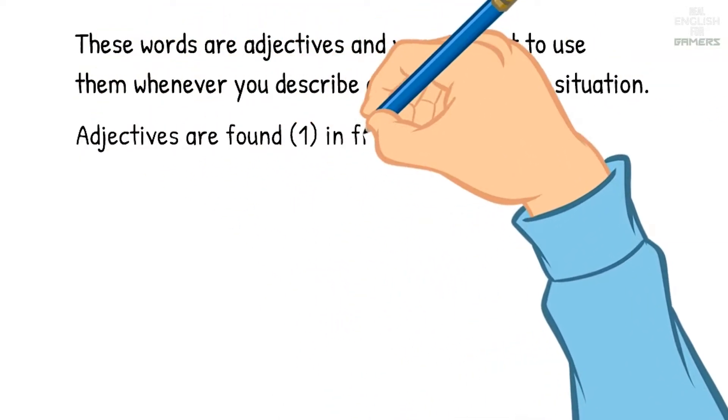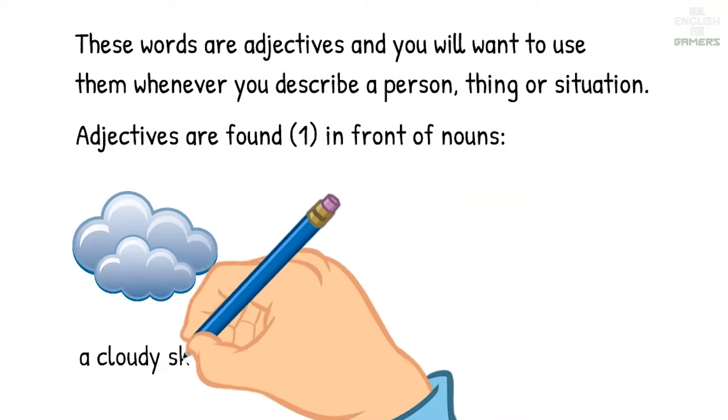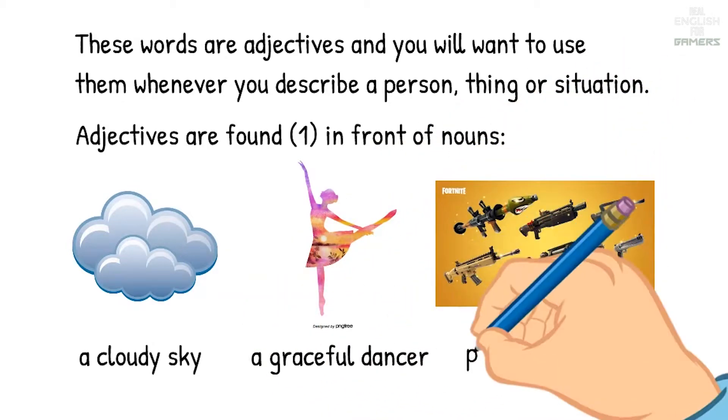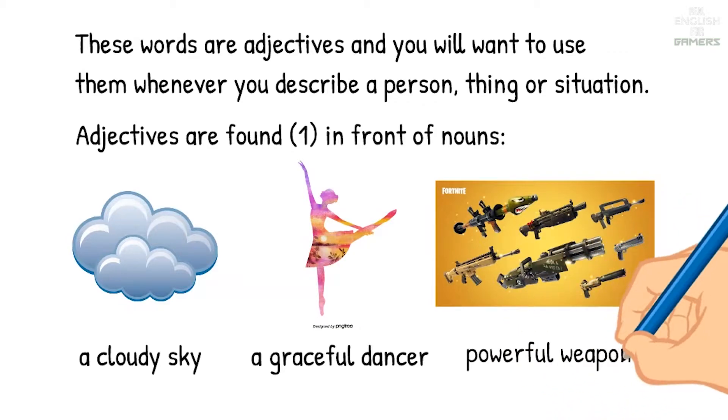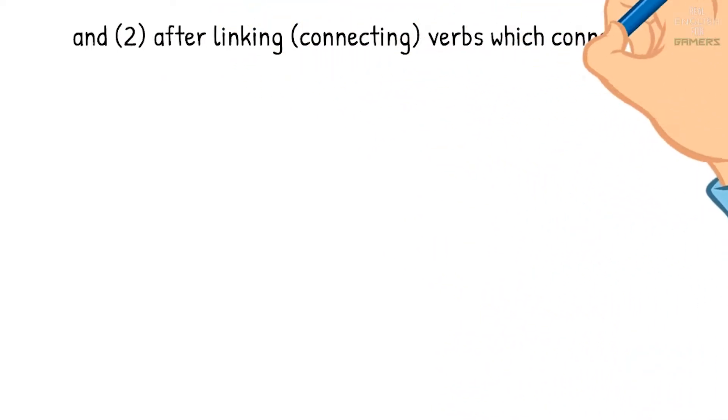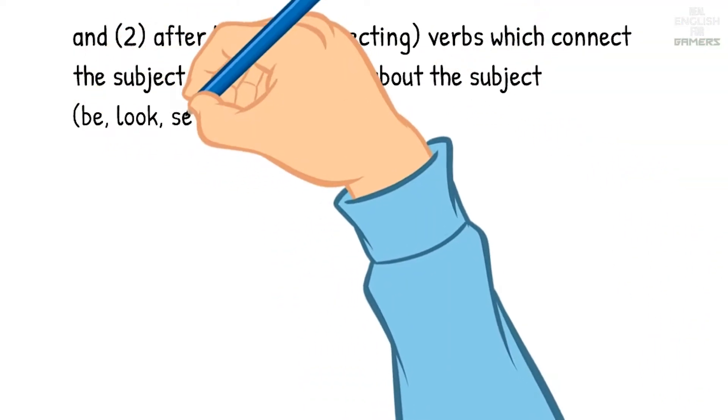Adjectives are found one, in front of nouns: a cloudy sky, a graceful dancer, powerful weapons.